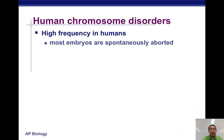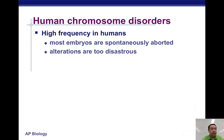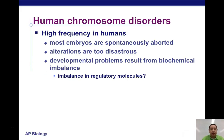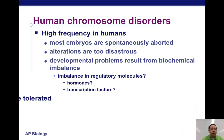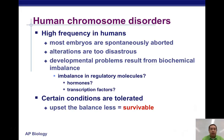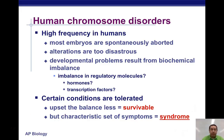Most of the time when this happens, because the baby will have so many problems, there's going to be a miscarriage or spontaneous abortion — it's just too problematic. A lot of these problems have to do with regulatory molecules, hormones, and transcription factors. Sometimes cases occur where the baby does survive, but it causes problems and a certain set of symptoms — we call that a syndrome.